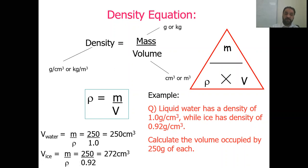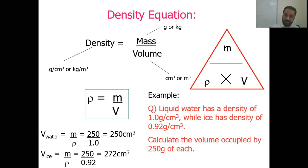The density of water is 1 gram per centimeter cube, whereas density of ice is 0.92 grams per centimeter cube. This means the density of water is more than that of ice, which is why ice always floats in water.